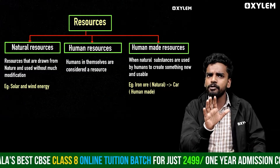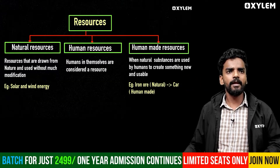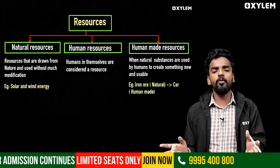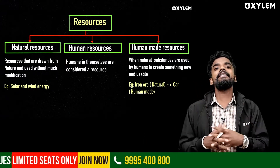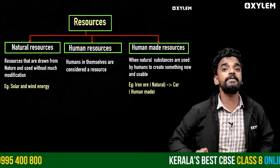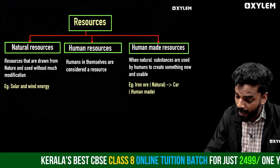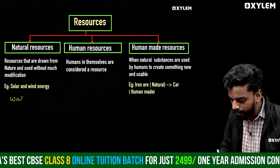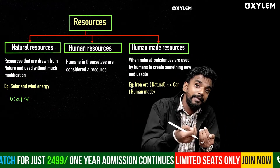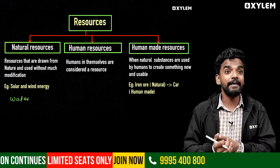There are three types of resources: natural resources, human resources, and human-made resources. The first is natural resources — resources that are drawn from nature and used without much modification. For example, solar energy, wind energy, and water are natural resources. We use them directly from nature without significant modification.